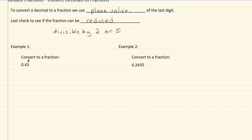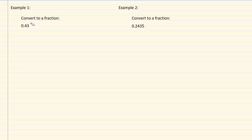Let's take a look at our two examples. In example one, it says to convert to a fraction and we have 0.43. We're looking at the place value for our last digit, which is in the hundredths place.